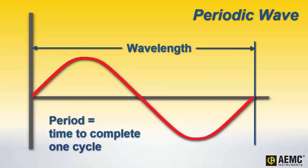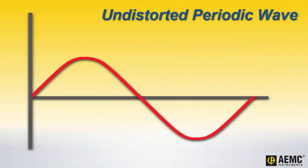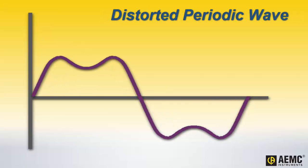Periodic waves are found in a wide variety of natural phenomena, including ocean waves, sound, and light. Electricity transmitted over the public power grid can also be graphed as periodic waves. A perfectly regular and symmetrical sine wave represents a very simple and clean example of a periodic wave. In the real world, however, periodic waves are subject to numerous influences that can affect their shapes. These can produce waves that display distortions and asymmetries, as shown on the screen.